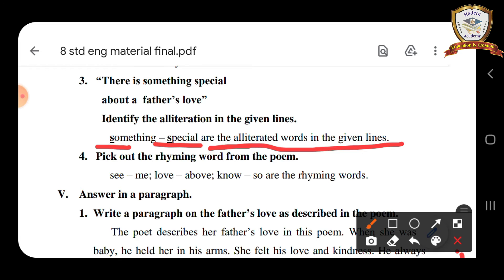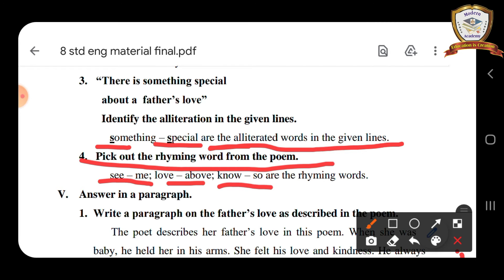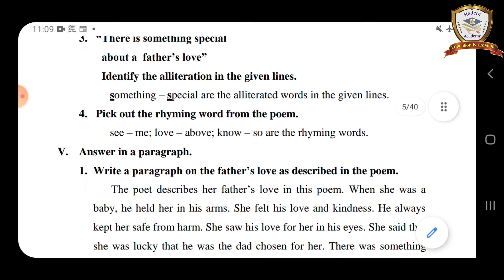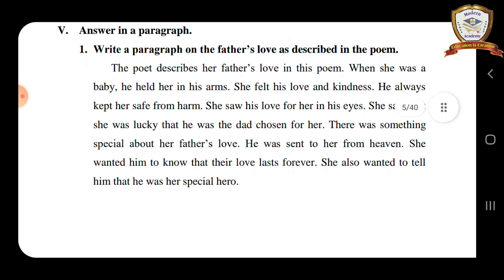Let's move on to the rhyming words — pick out the rhyming words from the poem: see/me, love/above, no/so — these are the rhyming words. Now let's go to the paragraph — answer in a paragraph: write a paragraph on the father's love as described in the poem.